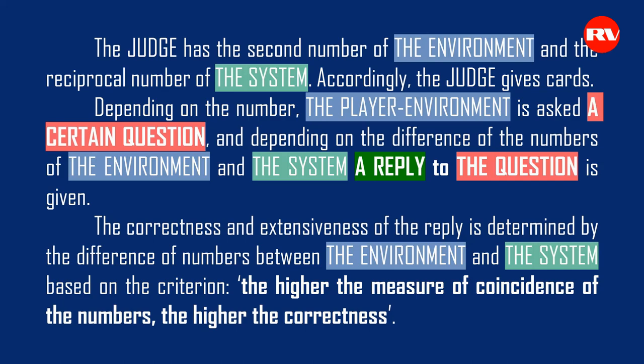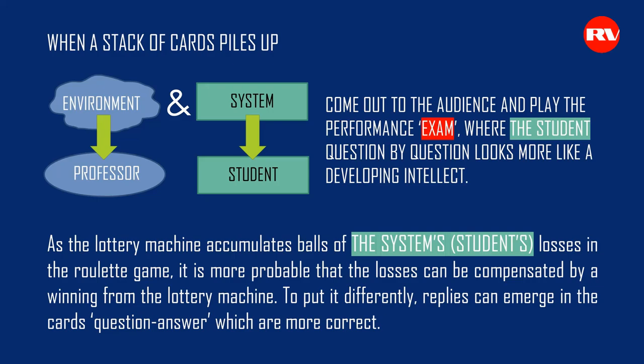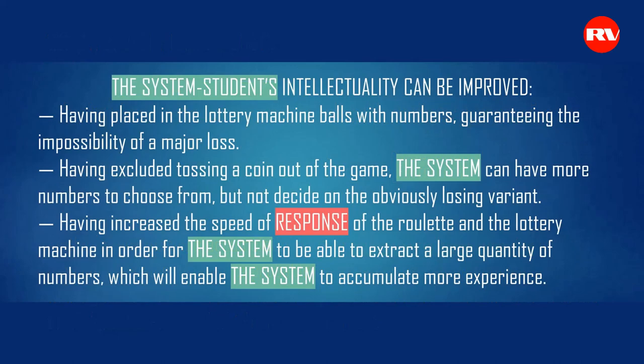When a stack of cards piles up, the environment professor and the system student come out to the audience and play the performance exam where the student, question by question, looks more like a developing intellect. As the lottery machine accumulates the system student's losses in the roulette game, it is more probable that the losses can be compensated by a winning from the lottery machine — replies can emerge in the cards question-answer which are more correct. The system student's intellectuality can be improved.